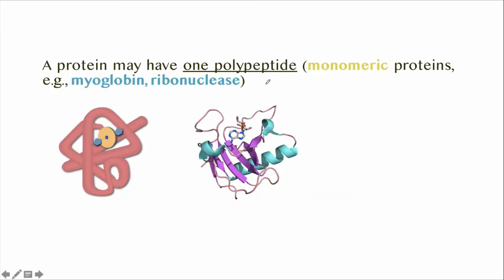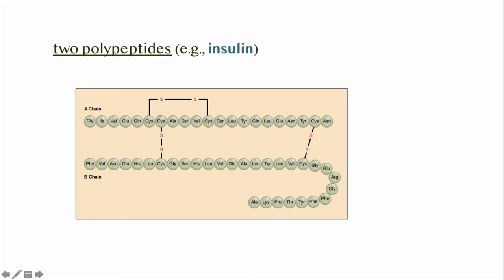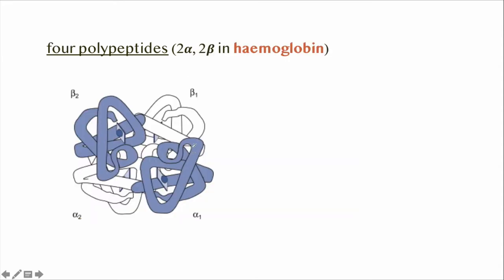A protein may have one polypeptide and is known as a monomeric protein — for example, myoglobin and ribonuclease. In the case of insulin, it has two polypeptides: chain A and chain B. In the case of hemoglobin, we have four polypeptide chains: alpha-1, alpha-2, beta-1, and beta-2.